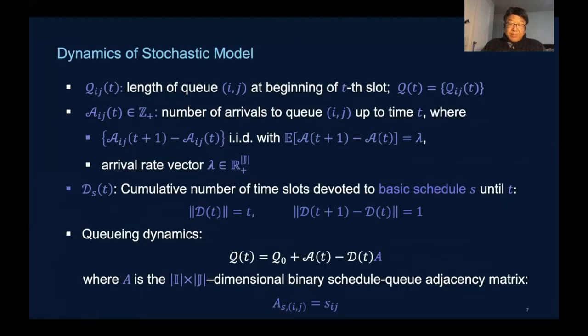At each time t, the basic system vector Q_ij is the number of packets waiting to be transmitted from i to j. The cumulative arrival process A_ij is assumed to be IID within each time period.